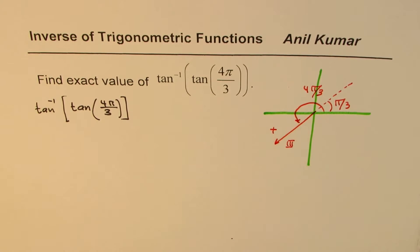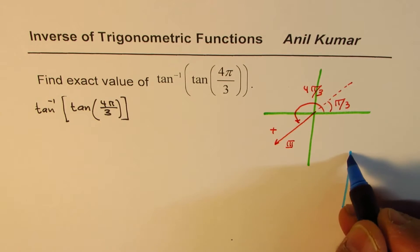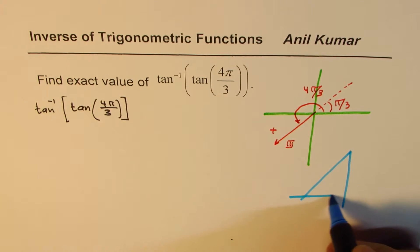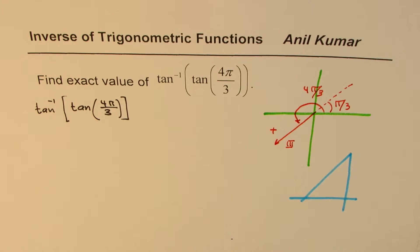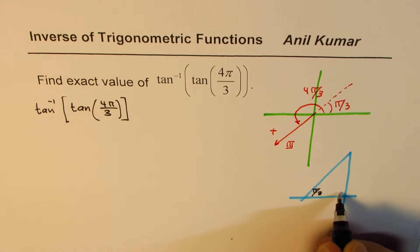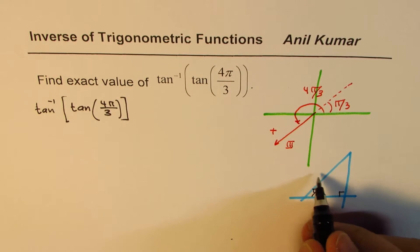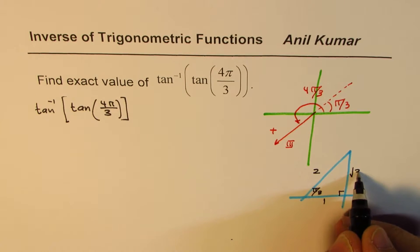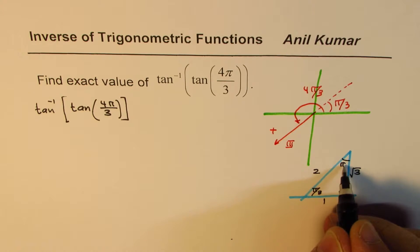If you look into this triangle, let me sketch the triangle with π by 3 angle so that without using calculator we are in a position to write down our solution. In this triangle, this is π by 3, 90 degrees, the sides are 1, 2, square root 3. That's the standard triangle.